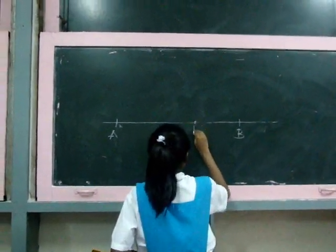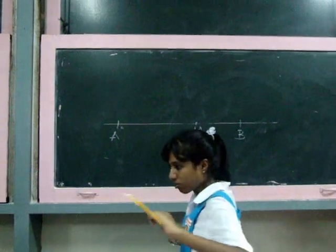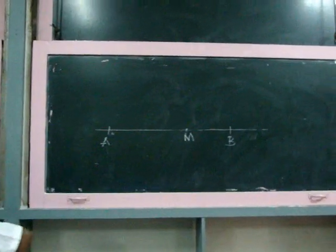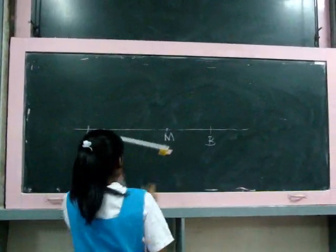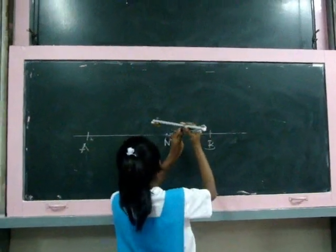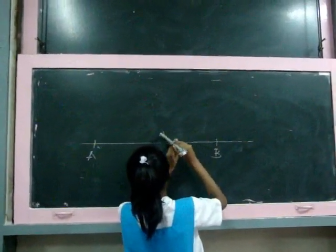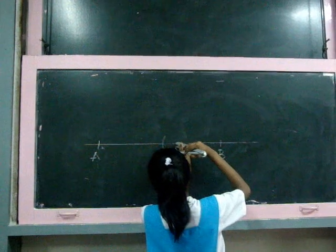Step 1: Place the point of the compass at M. Draw two arcs that intersect the line AB and are equidistant from M. Label the two intersection points as P and Q respectively.